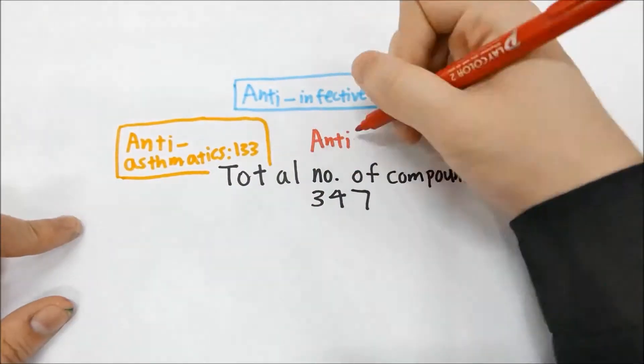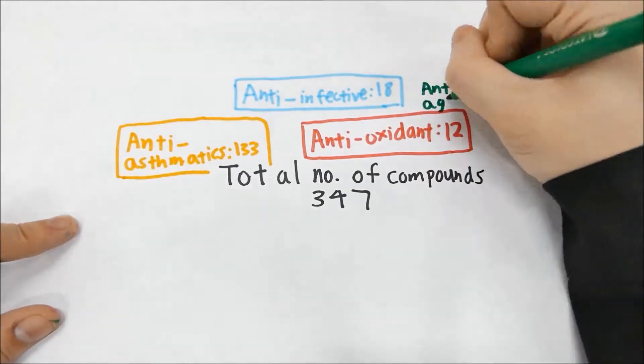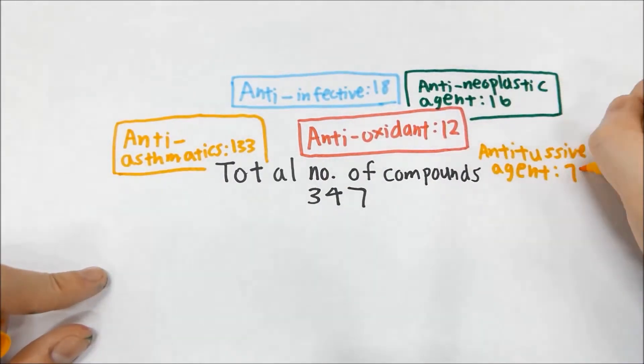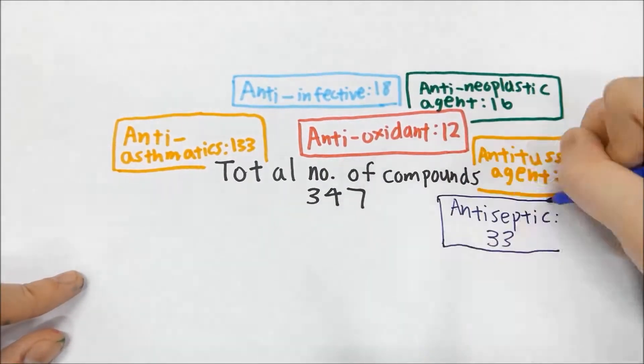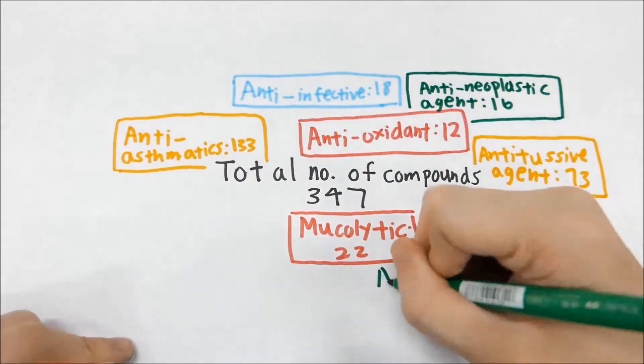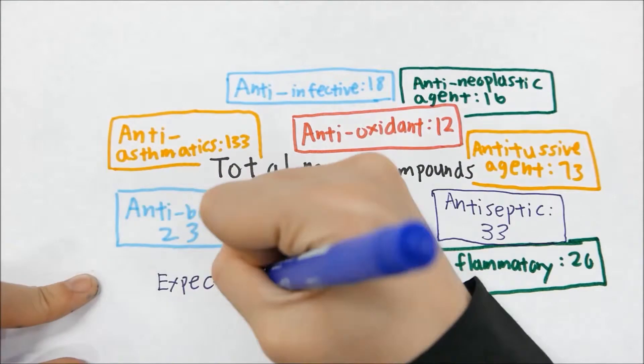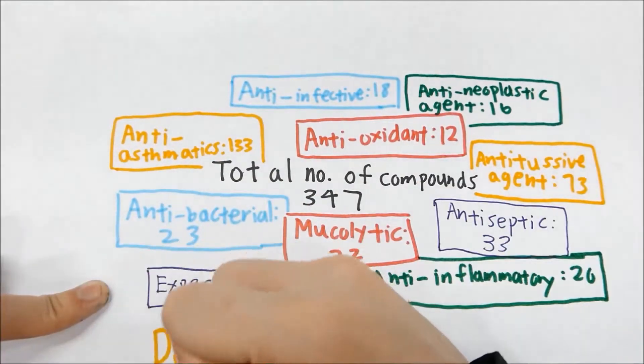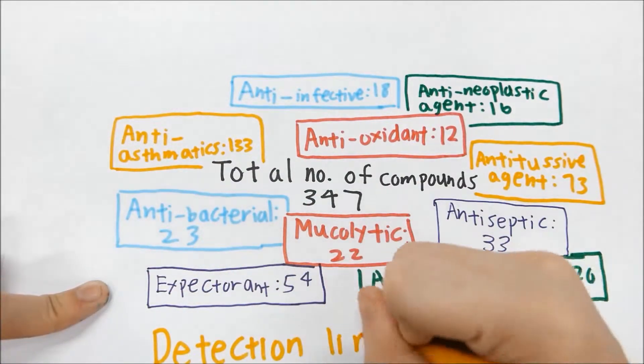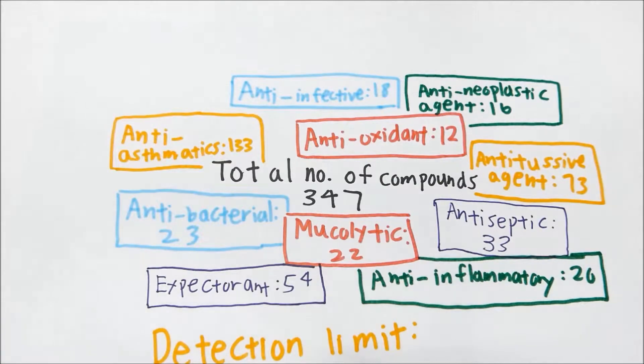These properties vary from anti-asthmatic, anti-infective, anti-oxidant, anti-neoplastic agent, anti-tussive, anti-septic, mucolytic, anti-inflammatory, antibacterial, and lastly expectorant properties. A detection limit of 0.0068% of the total chromatogram was achieved in this analysis.